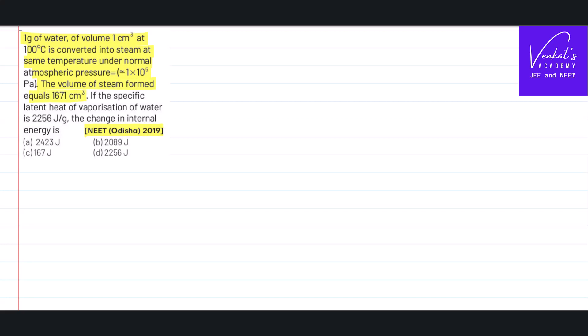Volume of the steam formed is given for you. Latent heat is also given for you. What is the change in internal energy is the question. So first of all, we can remind the first law of thermodynamics which says that heat energy supplied to a system equals change in internal energy and external work done by it.